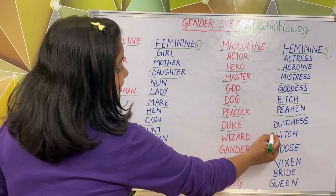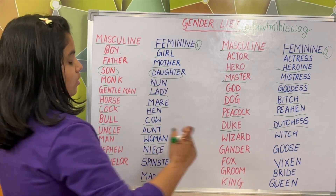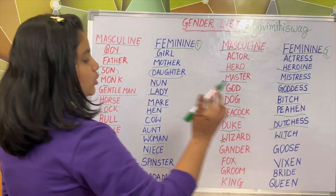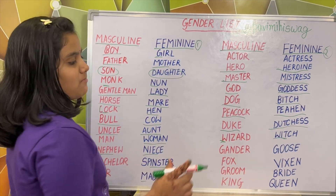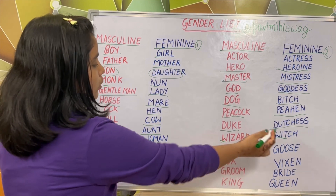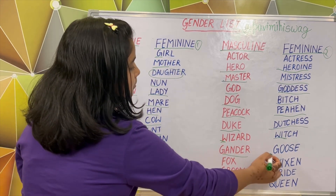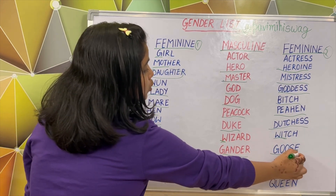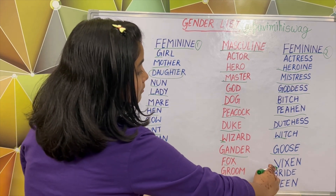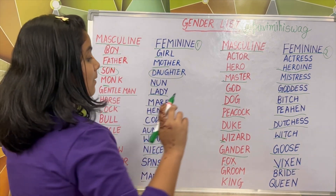Duke — duchess. Wizard — witch. Most of you have heard about witch, but the masculine gender of witch is wizard. Gander — goose. Fox — vixen. Groom — bride.